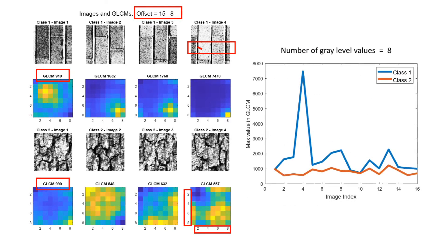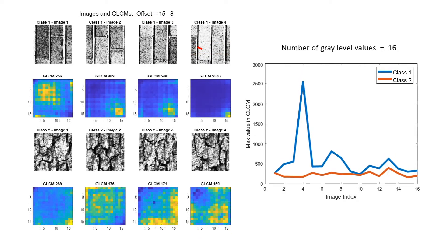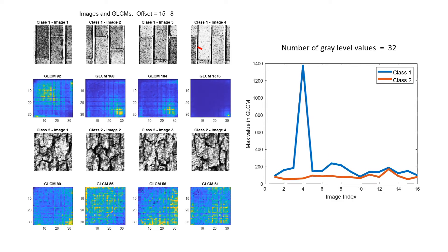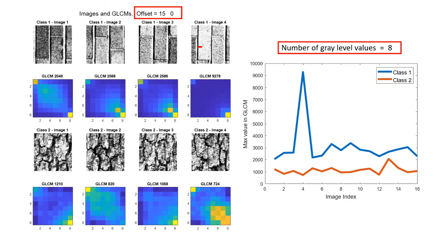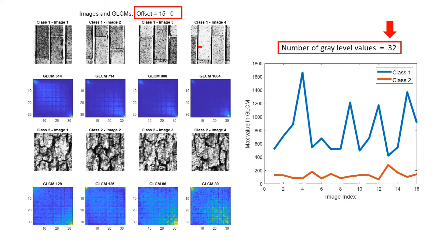Note that the size of the matrices corresponds to the number of gray level values used after quantization. The values of the maximum counts per class are shown here. As we can see, this metric alone wouldn't be enough to distinguish between the two classes, and using different values of quantization still doesn't perform as well as we would like. Nevertheless, we will keep the number of gray level values to 32 and change the value of the offset in order to detect vertical lines, as one class has them and the other doesn't. We can see that with those changes the feature becomes better, thus making the offset value critical to obtain a good feature for classification purposes.